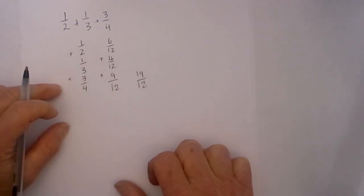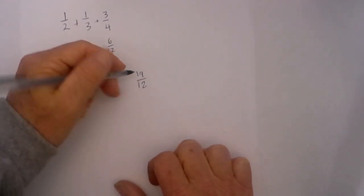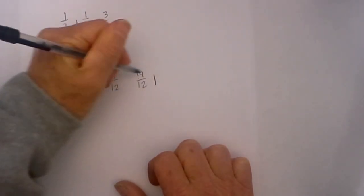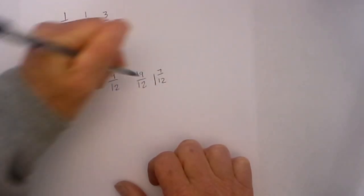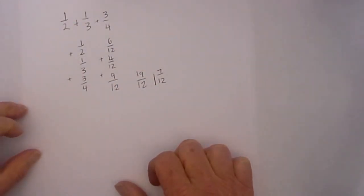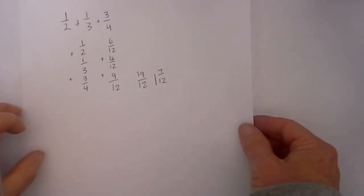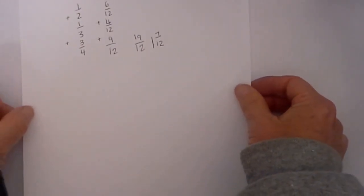I then have an improper fraction and I can make that a proper fraction by dividing twelve into nineteen, which goes one, and that leaves seven left over. So it is one and seven twelfths. Let's look at another example here.